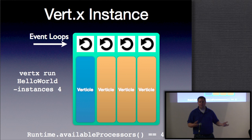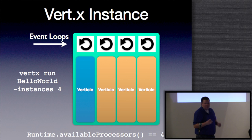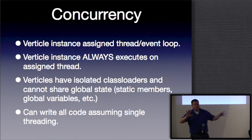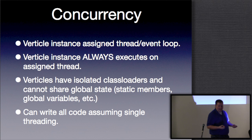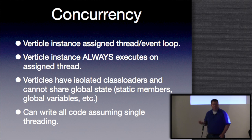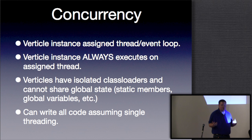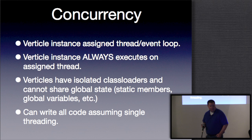We've got multiple threads in play — so how does Vert.x deal with concurrency? Each Verticle instance is assigned a thread and event loop. That Verticle instance is guaranteed to always execute on its assigned thread — it will never execute on any other thread. Once it gets that thread assignment it's always running there. A thread may execute multiple Verticles, but the same Verticle instance will never have its work done by another thread. Furthermore, the class loaders for Verticles are isolated, preventing them from sharing global state via static members or global variables. These constraints give us the ability to write all of our code assuming single-threading — no need for synchronization or locking.